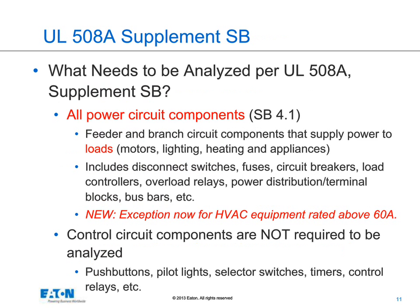Looking at UL508A Supplement SB in more detail: a common question is what components affect the SCCR of the assembly, and the answer is only power circuit components — those that supply loads. Loads to consider would be motors, lighting, heating, appliance, and often receptacles. So disconnect switches, fuses, breakers, and controllers that supply those loads would affect the SCCR. A new exception added in December allows that HVAC equipment rated above 60 amps does not affect the SCCR, and an enclosure air conditioner in an industrial control panel does not affect it either. Control circuit components such as push buttons, pilot lights, and selector switches also do not affect the SCCR.